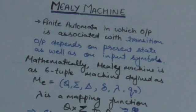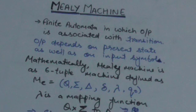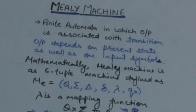So outputs are associated with transitions in the Mealy machine, but in the Moore machine outputs are associated with the present state.